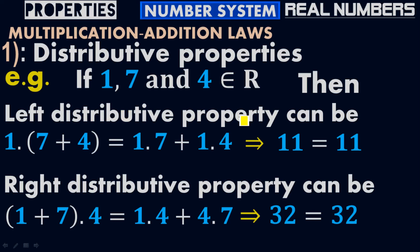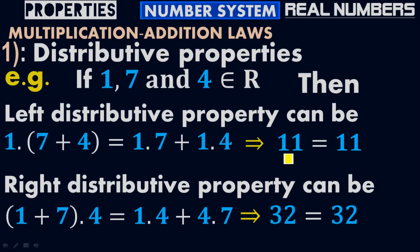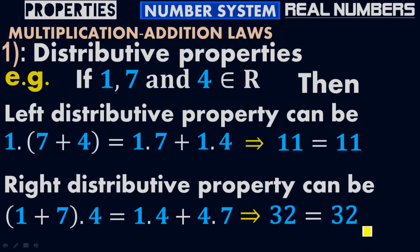According to the left distributive property, plugging in a equals 1, b equals 7, and c equals 4: 7 plus 4 is 11, and 11 times 1 is 11. On the right side, 1 times 7 is 7, and 1 times 4 is 4, giving 7 plus 4 equals 11. So the left side equals the right side. For the right distributive property: 1 plus 7 equals 8, and 8 times 4 is 32. So 4 plus 28 equals 32, therefore 32 equals 32.